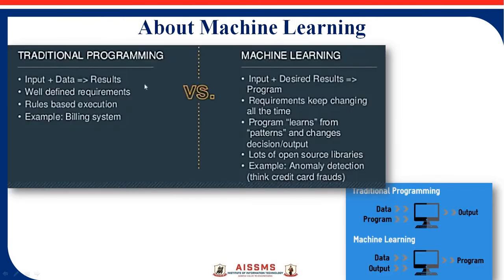The next topic is the difference between traditional programming and machine learning. We are all familiar with traditional programming — for example, arithmetic expressions where you pass data like 2 plus 2 to the machine and the machine generates the result 4. Examples of traditional programming include billing systems and languages like C, C++, and Java. In machine learning, you pass data and as per that information, they generate the result — whether the operation is addition, subtraction, or any other.